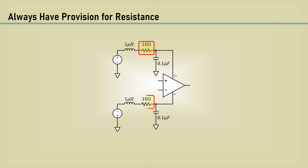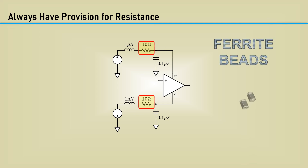I recommend always having at least a circuit board provision for series resistance in the decoupling network. If you are driving high current loads and the resistance seems to be too much, consider ferrite beads. If your power is clean and you need to drive high current loads, you can always put in 0 ohm resistors.